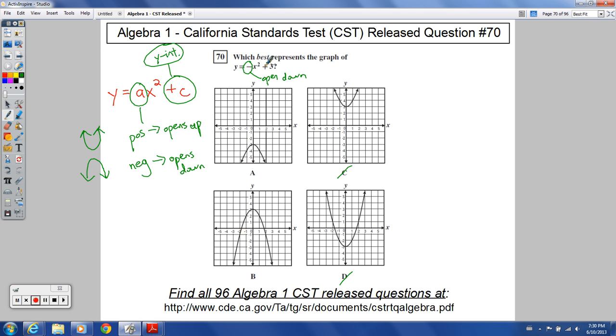So, what do we have there? What's the y-intercept? The y-intercept is at positive 3. So, which one crosses the y-axis at positive 3 and also opens down? This one crosses at positive 3, opens down. This one, though, crosses at negative 3 and opens down.